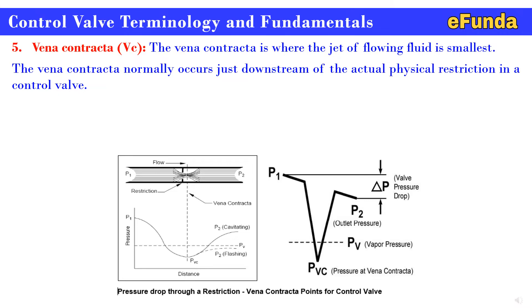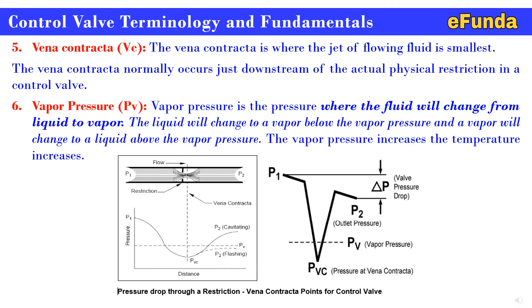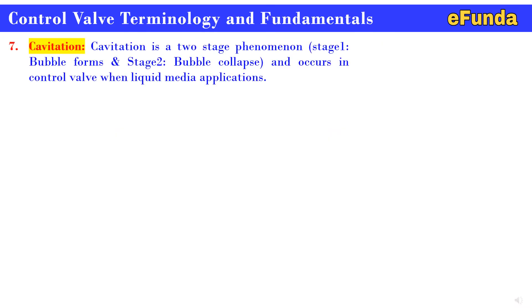Sixth: vapour pressure (Pv). Vapour pressure is the pressure at which a fluid will change from the liquid to vapour state. The liquid will change to vapour below the vapour pressure, and vapour will change to liquid above the vapour pressure. As shown in the pressure diagram, vapour pressure increases as temperature also increases.